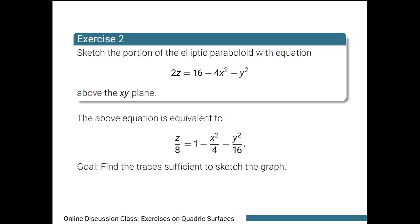To identify the sufficient traces to sketch the graph, we look at the equation and our goal is to eliminate each variable using an appropriate choice of value. To eliminate the term z over 8, we set z equals 0, giving us the xy-plane. To eliminate negative x squared over 4, we set x equal to 0, giving us the yz-plane. To eliminate negative y squared over 16, we set y equal to 0, giving us the xz-plane.